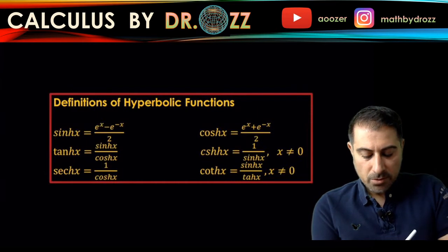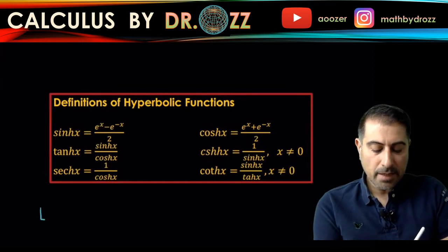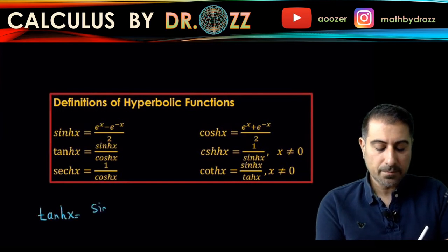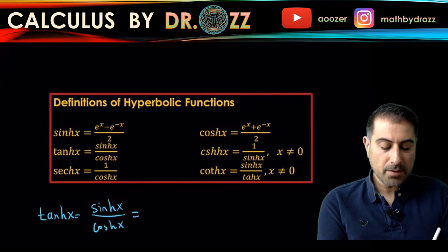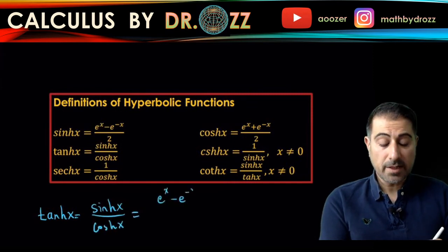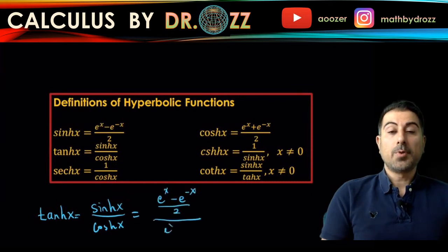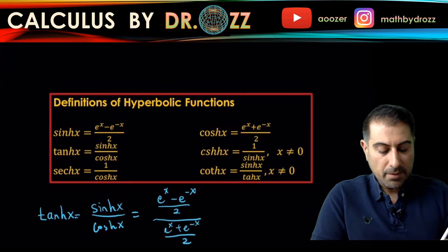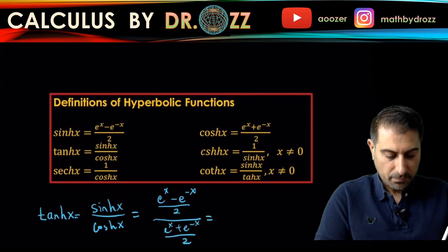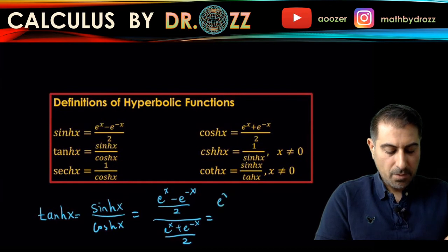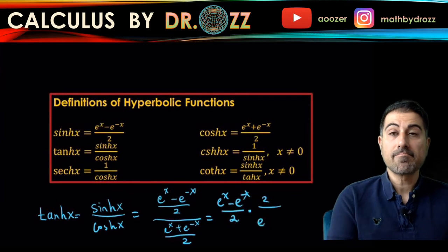So here, all I'm going to do is rewrite tanh x in terms of exponentials. Here we go. So I'm going to use e to the x minus e to the minus x divided by 2, all divided by e to the x plus e to the minus x over 2. And if you flip the bottom over, you have 2 over e to the x plus e to the minus x.